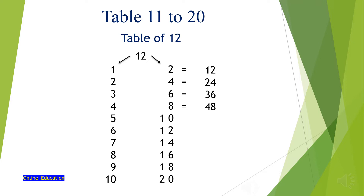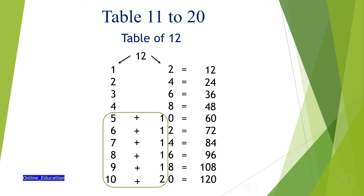As we cannot just merge 3 numbers, the trick is to add the number from the 1's table with the first digit of the number from the table of 2. Like 5 plus 1 equals 6, and then write the remaining number from table of 2, that is 0. So 12 fives are 60. Similarly, 6 plus 1 is 7 and the remaining 2 from table of 2's. So 12 sixes are 72, and so on — here is your table of 12 ready.